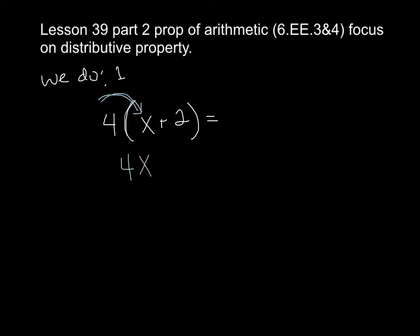And then I have this positive 4 and this positive 2. So it's 4 times 2, which is 8, positive 8. That's as simple as I can get. I'm done. That is the answer if you're needing to distribute into simplest form. There's nothing else I can do to this in order to solve it because I don't know what x is. So that was the we do on the distributive property in that way.